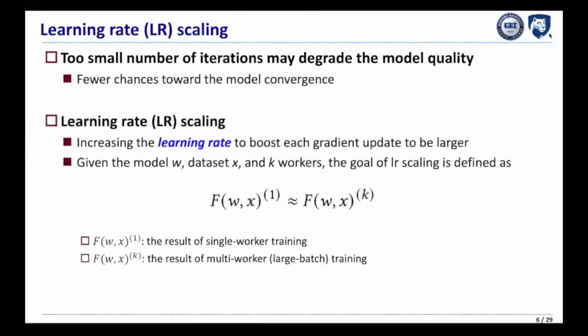However, if the reduction of iterations is too severe for a model to converge, it is likely to degrade model quality. To compensate for fewer iterations, learning rate scaling methods have been applied. These methods increase the learning rate to boost each gradient update to be larger.